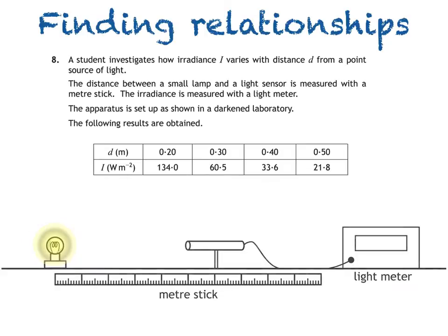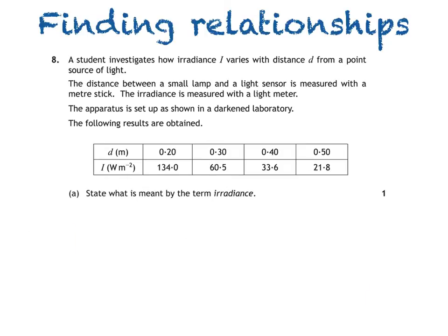The first part of the question asks us to state what's meant by the term irradiance. Now this is a video on relationships, and we can use an equation from the relationships sheet to help with our definition of irradiance. I is equal to P divided by A allows us to calculate irradiance by dividing power in watts by area in metres squared. And we can use it to give us the definition of irradiance, which is the power per unit area, or power per square metre.